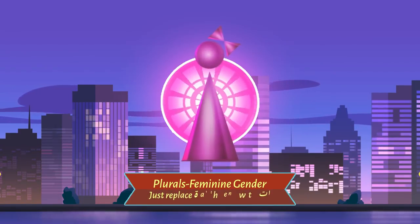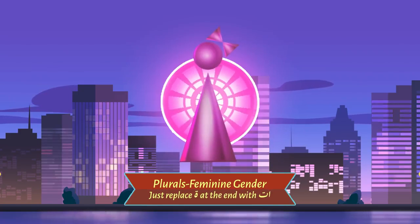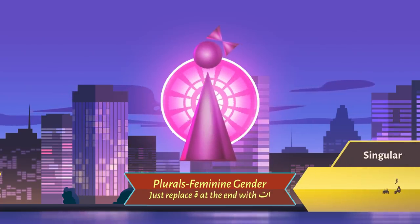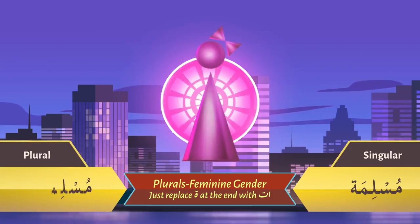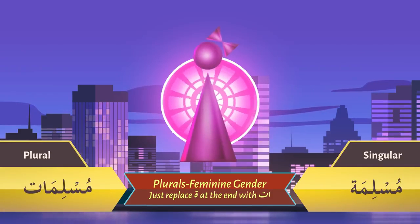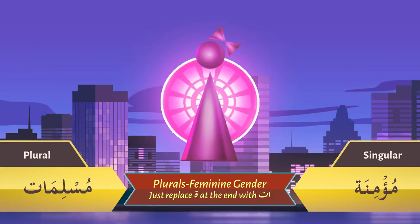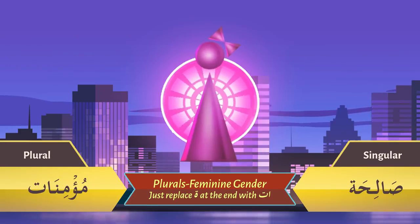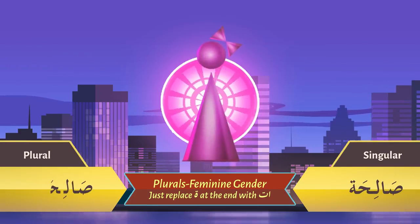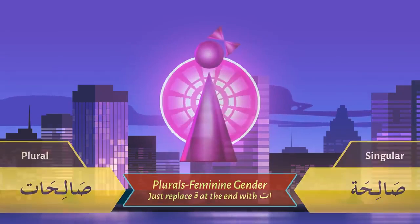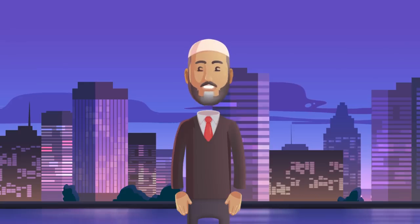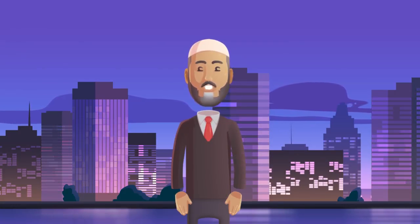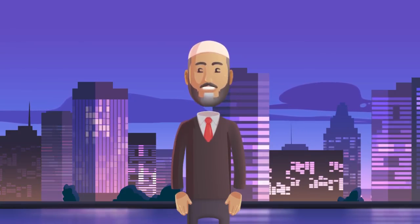Lastly, let us learn how to make plurals of feminine nouns — you just have to replace the round Ta (ة) at the end with aat (ات). For example: مُسْلِمَة → مُسْلِمَات، مُؤْمِنَة → مُؤْمِنَات، صَالِحَة → صَالِحَات. ماشاء الله! That's it for now. جَزَاكُمُ اللهُ خَيْرًا وَالسَّلَامُ عَلَيْكُمْ وَرَحْمَةُ اللهِ وَبَرَكَاتُهُ.